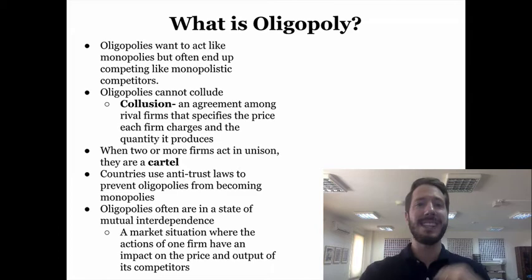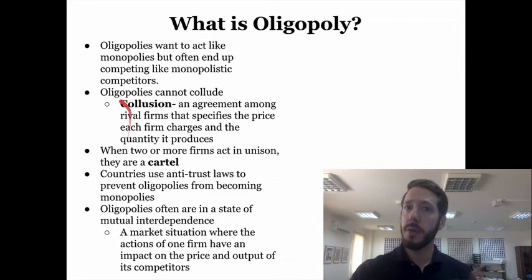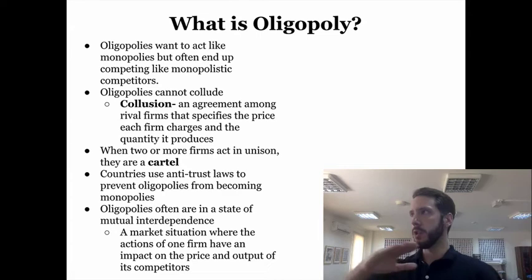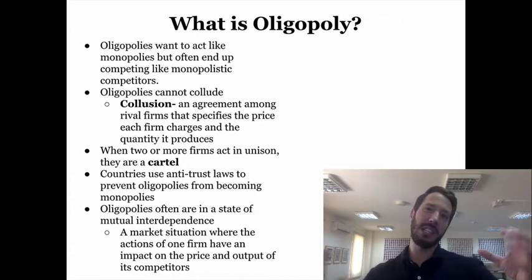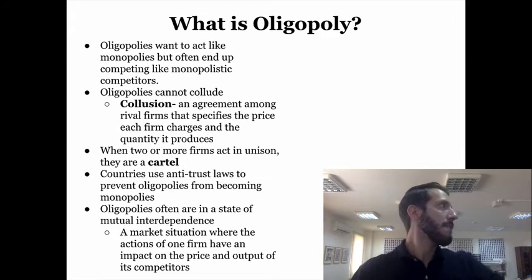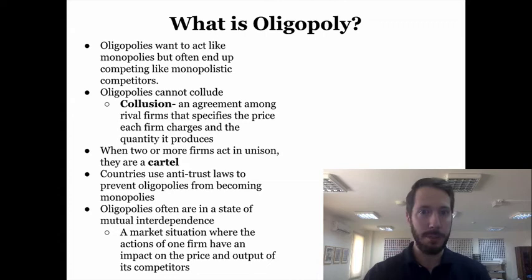One key thing about oligopolies is they cannot collude. Collusion is an agreement between firms to set their own prices and quantities — so it would be as if Verizon and AT&T got together and agreed on prices and quantities, basically forming a monopoly together. When they do that, they become a cartel. Countries use antitrust laws to prevent that from happening. Businesses would want to do this because if they can agree on price and quantity, they can guarantee production and revenue, essentially acting like a monopoly.